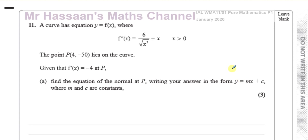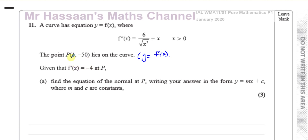So f double dash x equals 6 over x cubed plus x, x is greater than 0. The point (4, −50) lies on the curve y equals f of x. Given that f dash of x is equal to minus 4 at P, we need to find the equation of the normal at P, writing the answer in the form y equals mx plus c where m and c are constants. We know the first differential has value minus 4 at point P.